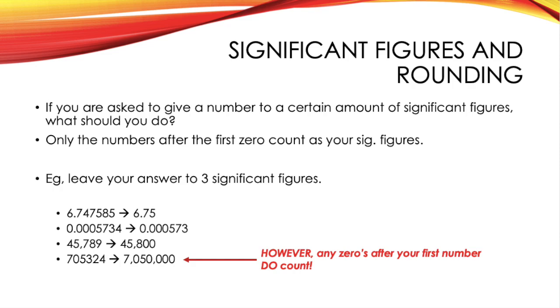So, looking at some examples, here, you need to leave your answer to three significant figures. So, the first number of 6.747585, you'd round the third decimal place so that it would become 6.75. With the second example, the first four zeros don't count as your significant figures. Instead, your significant figure would become 0.000573. And I've just given these next two examples to show what would happen with a larger number as opposed to a decimal place, when you still need to leave it to three significant figures.